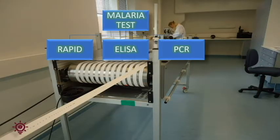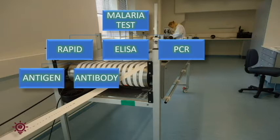Types of tests used to detect malaria are rapid tests, ELISA, and PCR. Here we will focus on rapid tests, as more than 80% of testing done worldwide is through rapid tests. There are two types of rapid tests available in the market: the antigen test and the antibody test. Antibody tests are usually not used because even a previously infected and cured patient shows a positive result due to antibody presence.